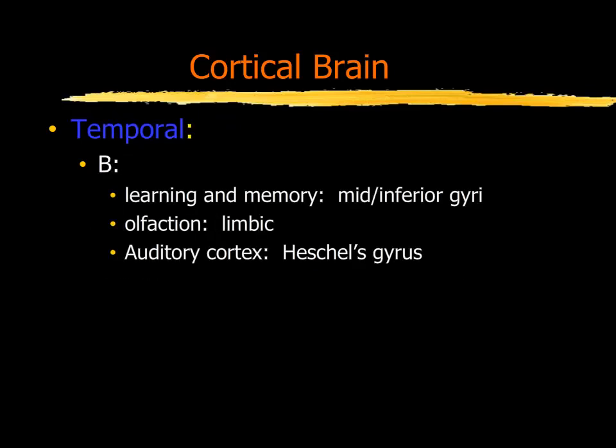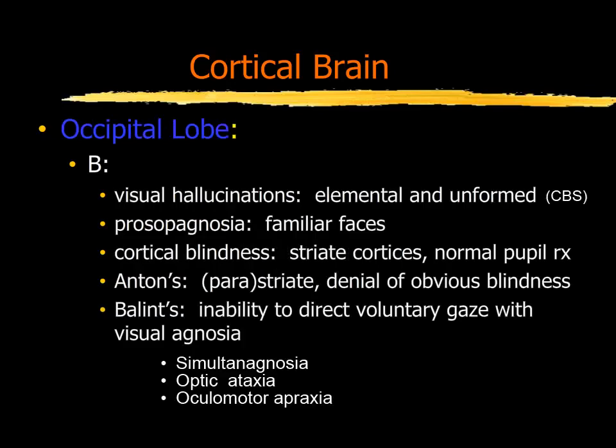The temporal lobe is important for learning and memory as well as olfaction. The occipital lobes, of course, are the site of both primary and associative visual cortex, and dysfunction of those regions can produce some fairly unusual or bizarre symptoms.